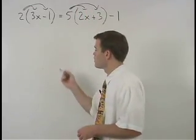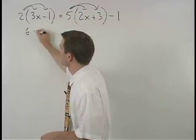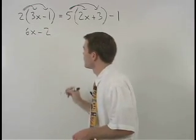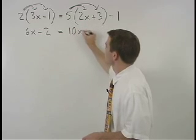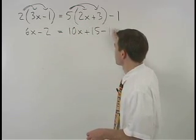On the left, we get 6x minus 2, and on the right, we get 10x plus 15 minus 1.